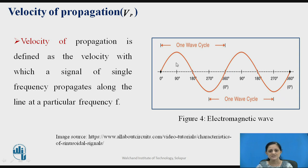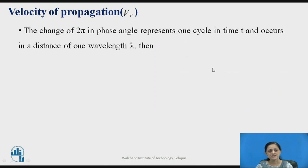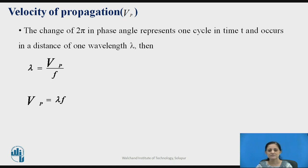This one wave cycle travels with a velocity that can be calculated for a single frequency. The frequency can be calculated as 1 by T, where T is the time period. The velocity of propagation is denoted with the letter Vp, for phase velocity. The change of 2 pi in phase angle represents one cycle in time T, which occurs in a distance of one wavelength lambda. Lambda is given by Vp divided by f, so the velocity of propagation equals lambda times f. Wavelength multiplied by frequency f gives Vp, the phase velocity.